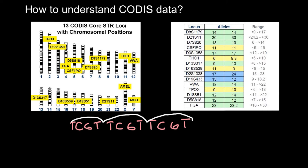What are the peculiarities I wanted to talk about today? If you take a better look at the data, you would see some peculiar numbers. We understand that all tandem repeats come in discrete numbers — 2 repeats, 3 repeats, 10 repeats — but what do numbers like 9.3 and 23.2 mean? For the TH01 locus, in the gene pool we can find alleles between 5 and 10. On one chromosome we see 6 repeats, and on the other we see 9.3 repeats. What does that mean?